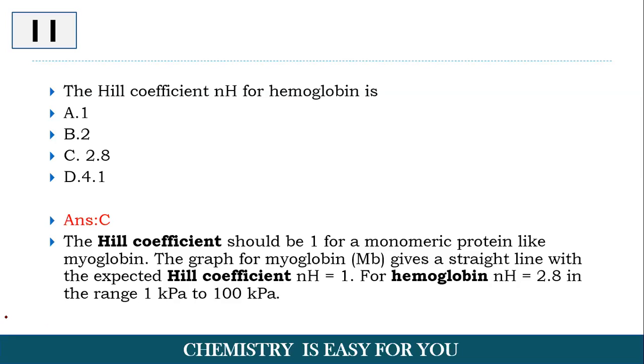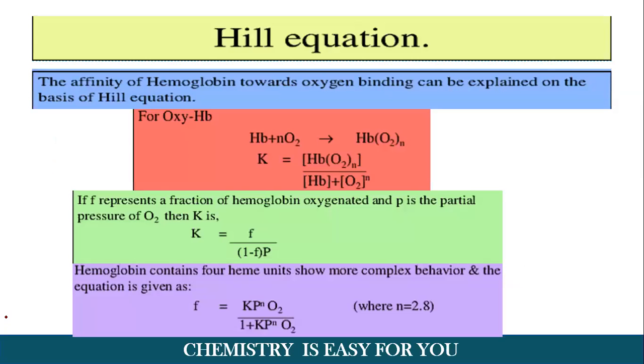If it was a monomer, it would be having a Hill coefficient of 1 but since this is a tetramer, the Hill coefficient is not 1 and it is equal to 2.8 and this 2.8 exists in the pressure range of 1 kilopascal to 100 kilopascal. Now these are the sets of questions that we are going to discuss but I want to discuss a little bit further about what this Hill equation is.